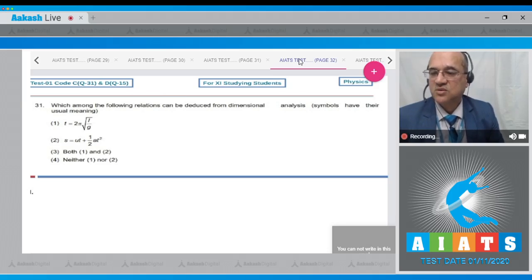Now, question number 31 says, which among the following relations can be deduced from dimensional analysis? Symbols have their usual meanings. The first is t equals 2π root of l by g. Second is s equals ut plus half t squared, both 1 and 2, and neither 1 nor 2.